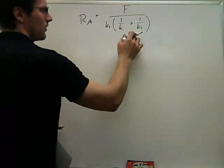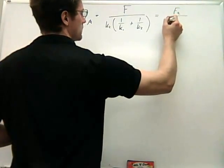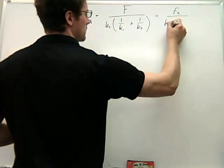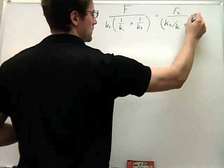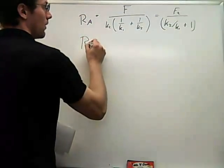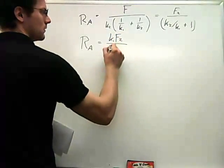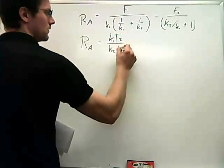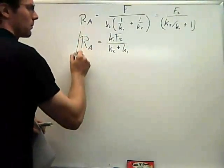So I'll put the K2 inside this parenthesis, and then I'll multiply the top and bottom by K1. Okay, and this is my final expression.